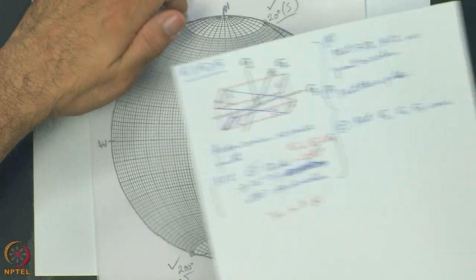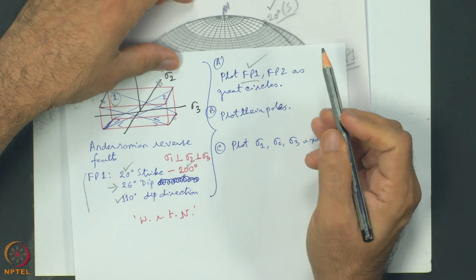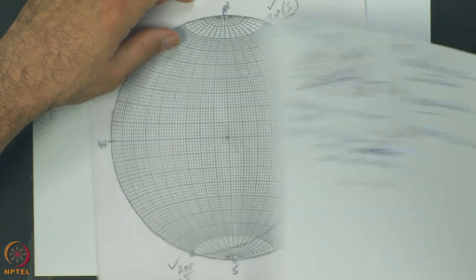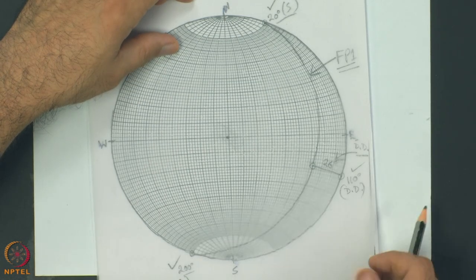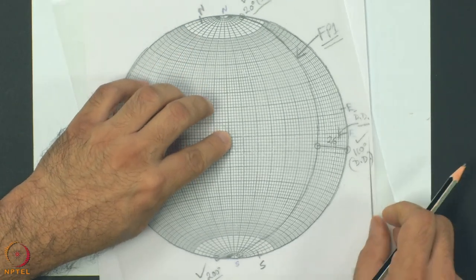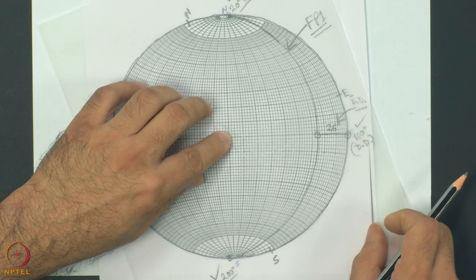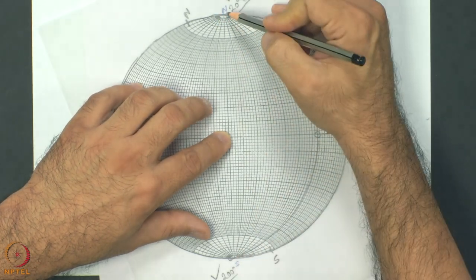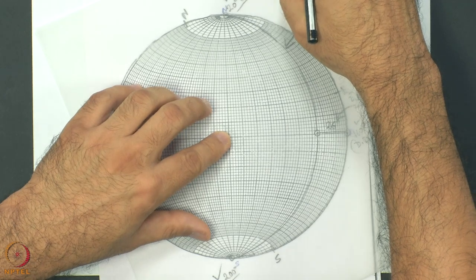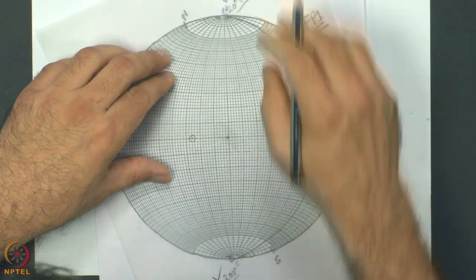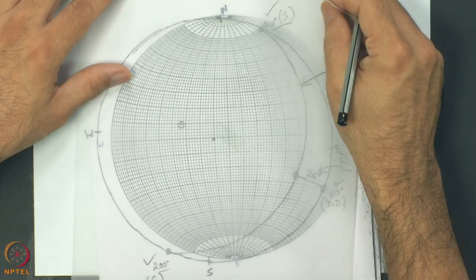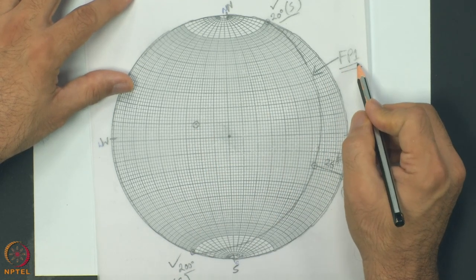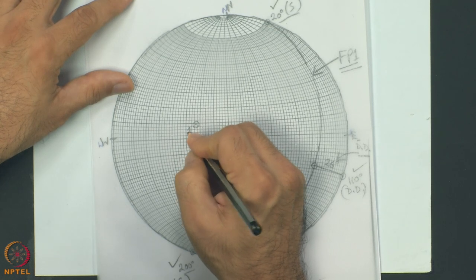Now let us come back to the question. Plotting fault plane 1 as a great circle is done. Next, I plot the pole of fault plane 1. To do that, I maintain the centre superposed and orient the great circle representing the fault plane with the north-south of the stereonet. This point is the pole of fault plane 1 - I label it simply as 1.